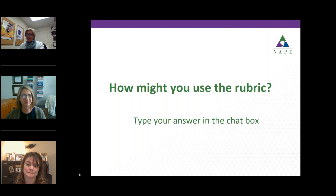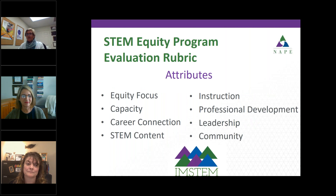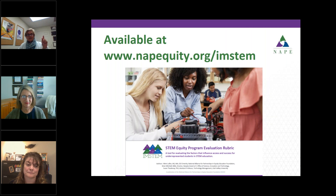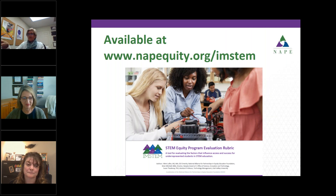I'm going to back the screen up. Somebody was asking where the URL is for the rubric — you can find it on this page. If you go to NAPEquity.org slash I'm STEM, scroll down the page, you'll see an item that says 'STEM equity program evaluation rubric.' Click on that and it'll take you to the landing page for the document. Then you can click on the image, just like the one you see here on the screen, and the document will download for you.